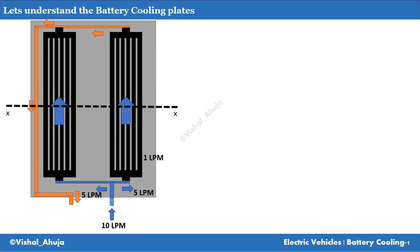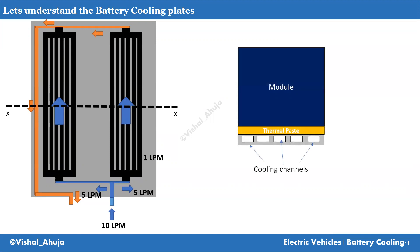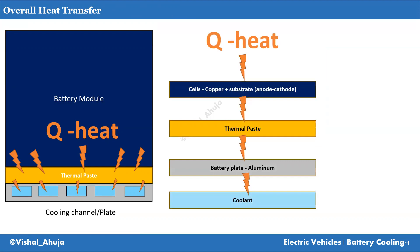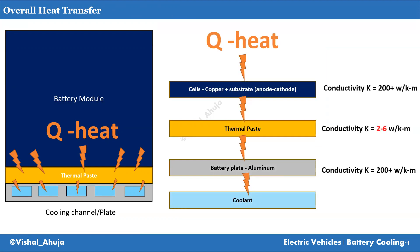Let's take a cross section of this area. You will see there is a module, below which is a thermal plate and thermal paste or pads, below which are the cooling channels. The heat comes from the cells to the paste, and the paste transfers heat to the cooling channels via the aluminum plate — this becomes a series of events. If you see the conductivity values, thermal paste is quite low compared to the nearby components like copper or aluminum, so this may seem to cause a hindrance in heat transfer. Let's understand in more detail with some thermal analysis.